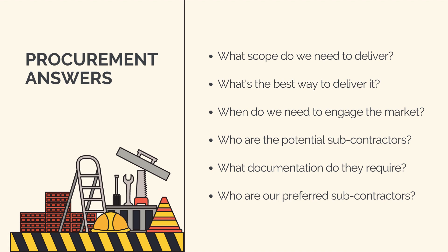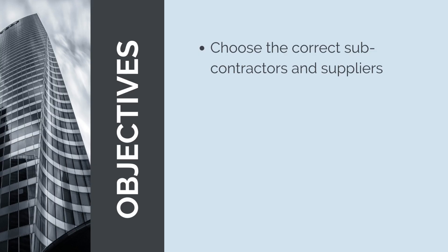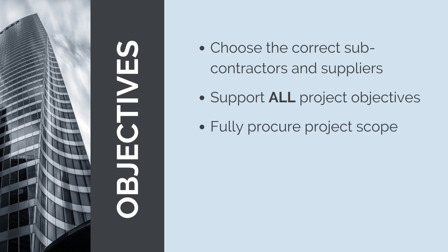If we've done procurement correctly, we will have chosen the subcontractors and suppliers best placed to help us achieve project success. This means supporting all the project objectives — we want to choose subcontractors and suppliers who can help us deliver the project ahead of schedule, under budget and to the required quality standards. Too often, we can fall into the trap of choosing subcontractors with the lowest costs, sacrificing other project outcomes. Furthermore, we want to fully procure the project scope, meaning there are no major scope gaps leading to expensive variations and unplanned changes during delivery. And finally, we want to conduct procurement in a disciplined fashion — through procurement we'll be signing legally binding agreements with subcontracts, so we need to make sure we're following the correct process to avoid legal disputes at a later date.